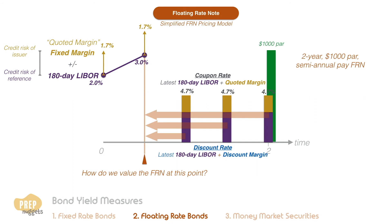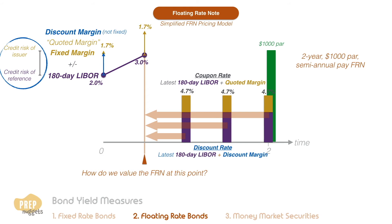Now, what is the discount margin? The discount margin is the same as the quoted margin at issuance — that is, the credit risk of the issuer relative to the credit risk of the reference rate instrument. In this case, however, the margin is not fixed. The discount margin at issuance should be the same as the quoted margin, but as time goes by, the credit risk of the issuer would have changed. So, for example, the credit risk of the issuer may have improved such that the discount margin has narrowed to just 1.4% after the first coupon payout.